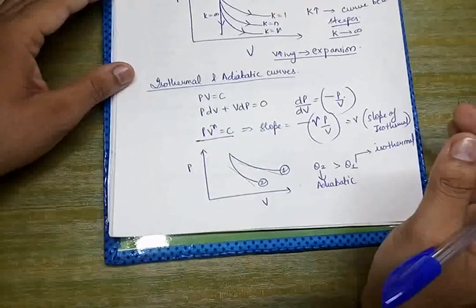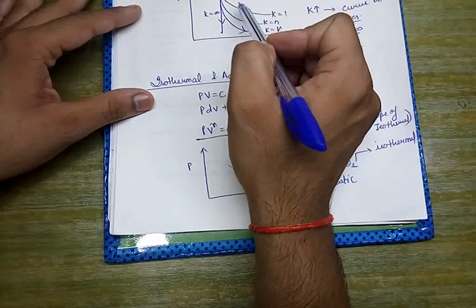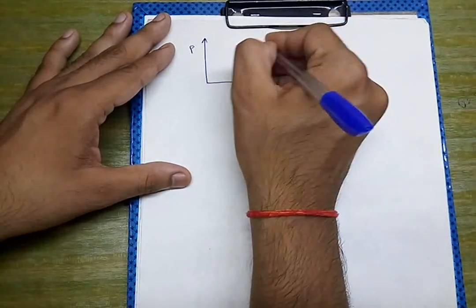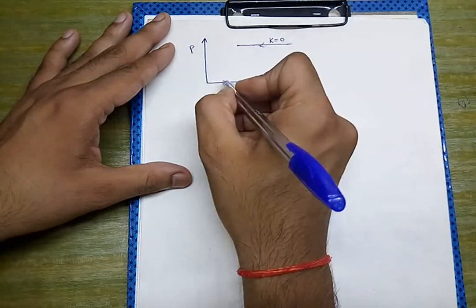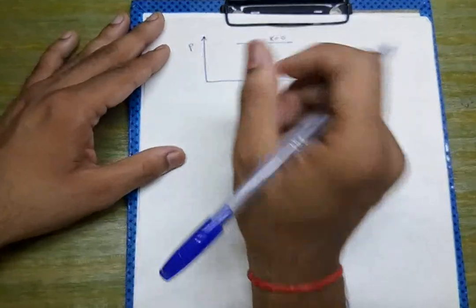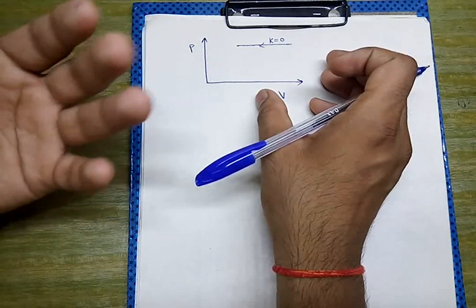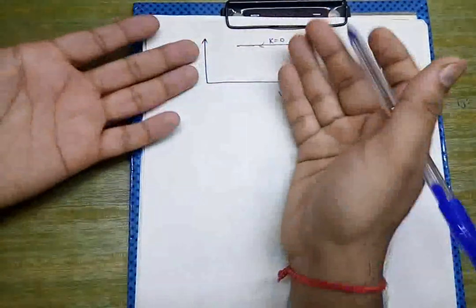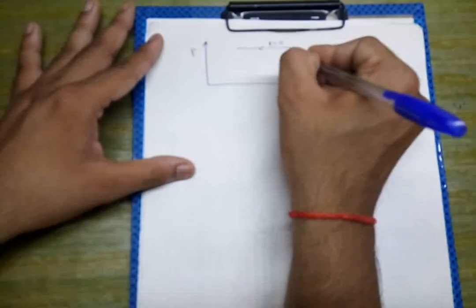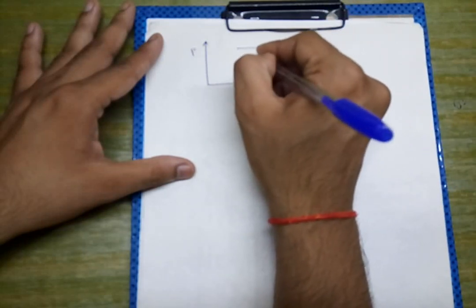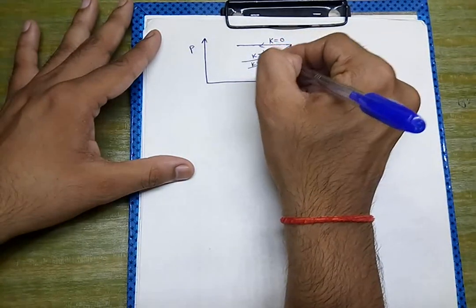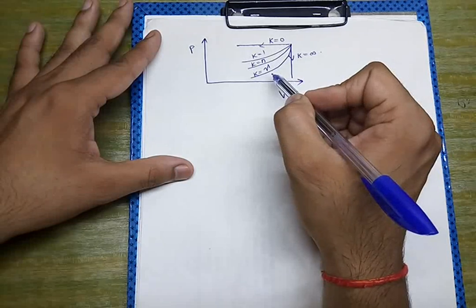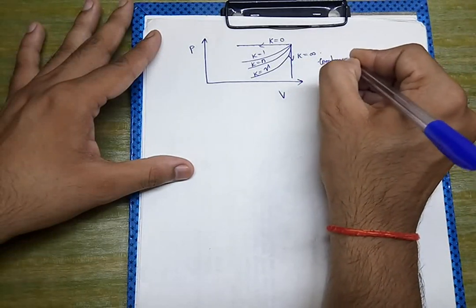For expansion, volume increases, so arrows go to the right on the PV diagram. For compression, volume should decrease finally, so arrows go to the left. In a compression graph, k = infinity, k = gamma, k = n, and k = 1 are shown, and the polytropic process lies between the adiabatic and the isothermal curves.